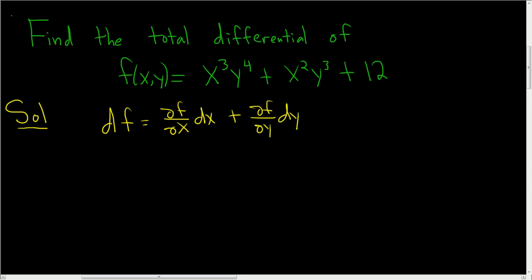So let's go ahead and find all of these things and then plug them in. So ∂f/∂x, let's see, we're treating y as constant, so when we take the derivative, we'll just get 3x²y⁴. Right, y is a constant. And likewise here we're treating y as constant, so we get 2xy³, and the derivative of 12 is 0.